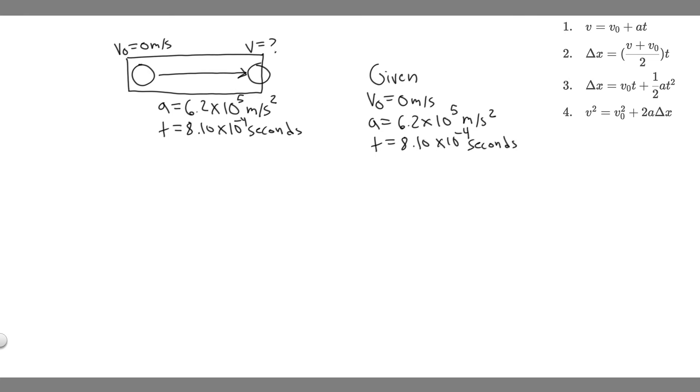Now we have all the kinematic variables. What we're solving for is v. If we look at our kinematic equations here, which is what we're going to use to solve, we have three of the variables. What we want to do is solve for v. If you notice, equations 2 through 4 all contain the variable delta x, which we're not given. We actually can't use those.